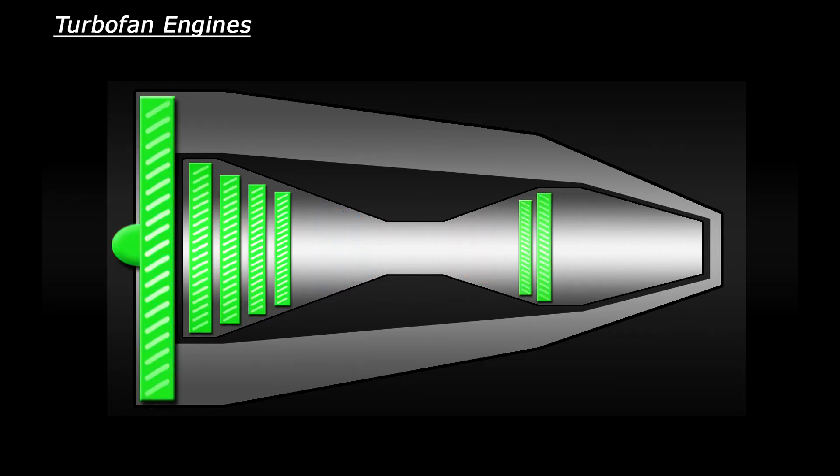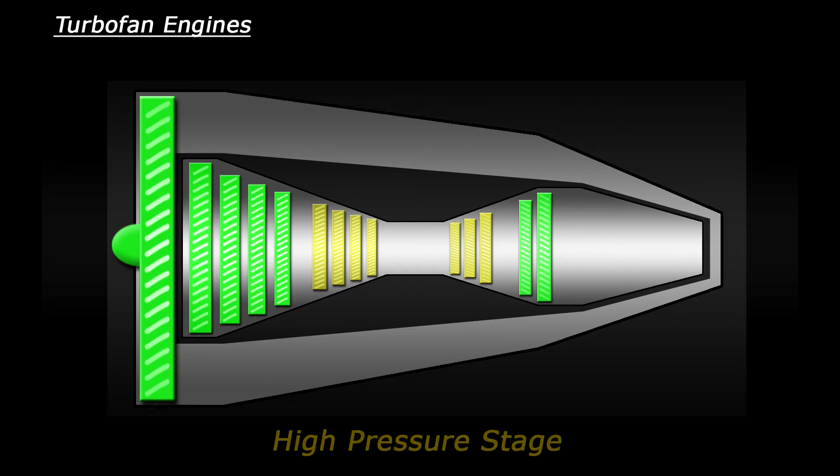The first compressor and the last turbine are known as the low pressure stage. It could also be called the low pressure spool. The second compressor and the first turbine right in the core of the engine is your high pressure stage because the air pressure is at its highest right in the center of the engine.